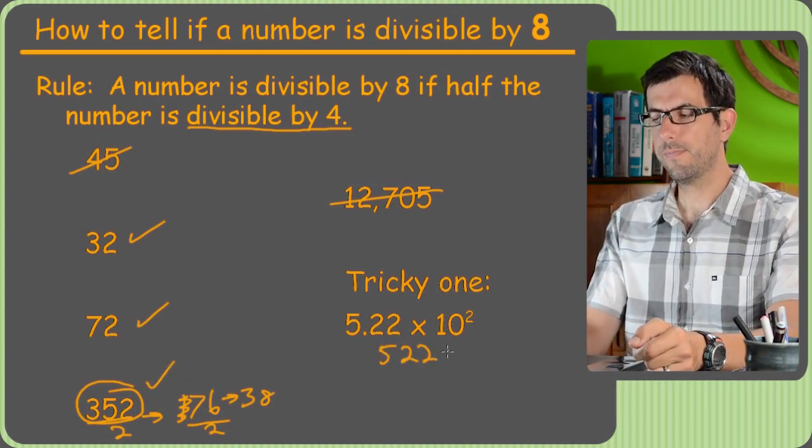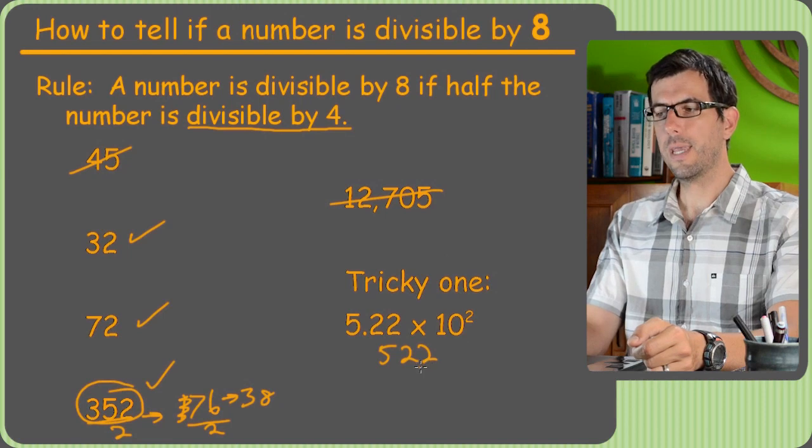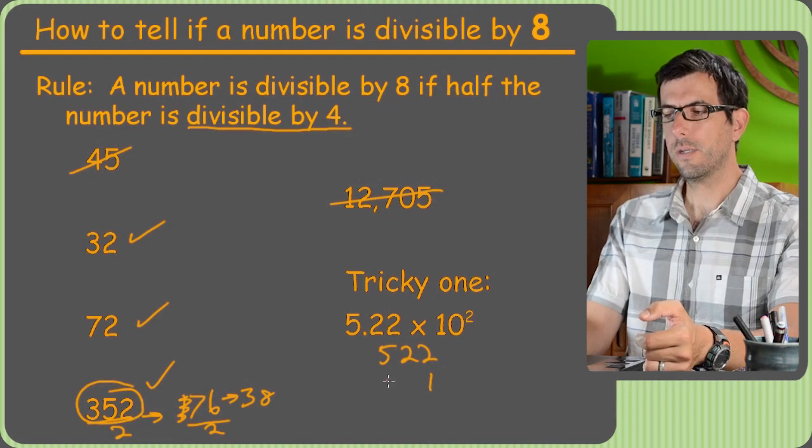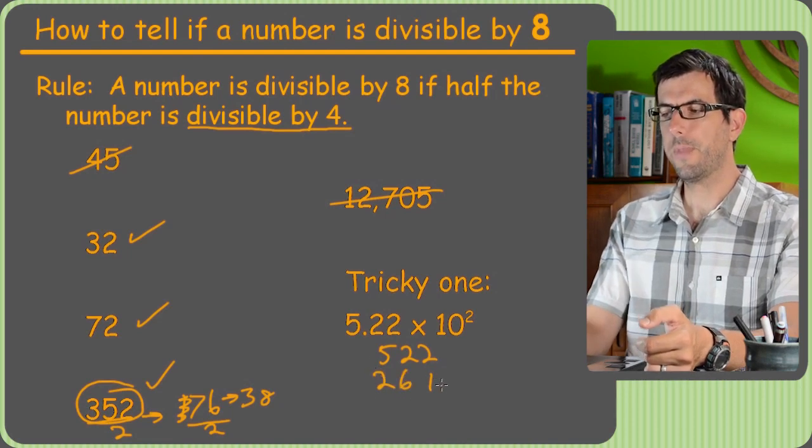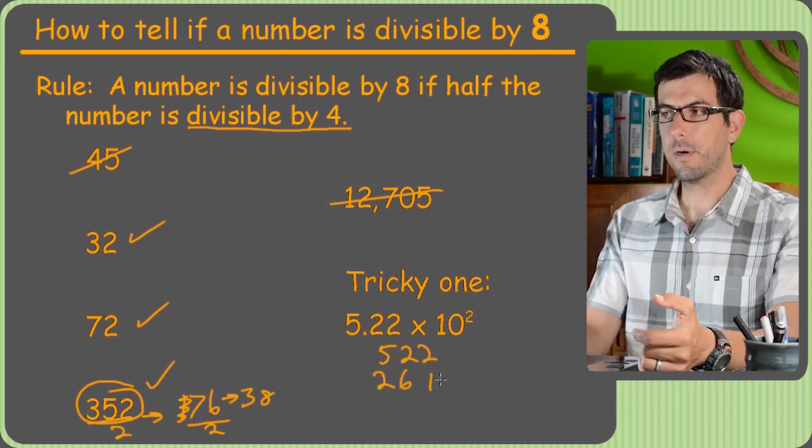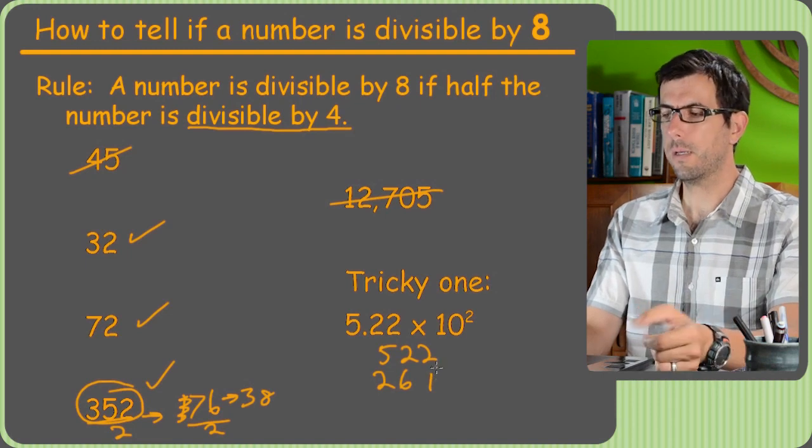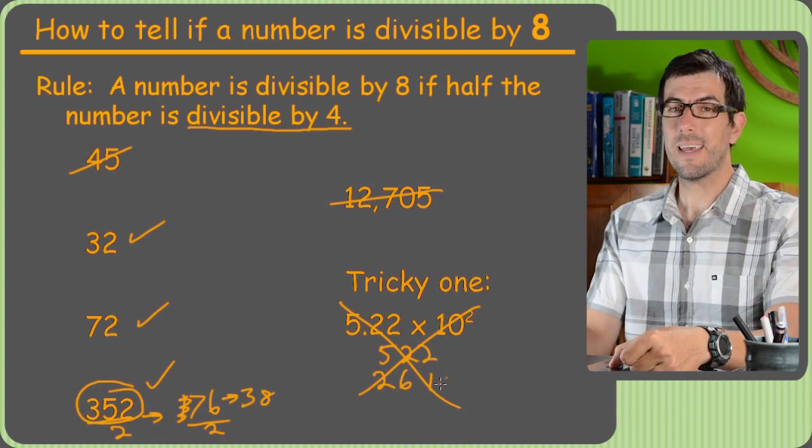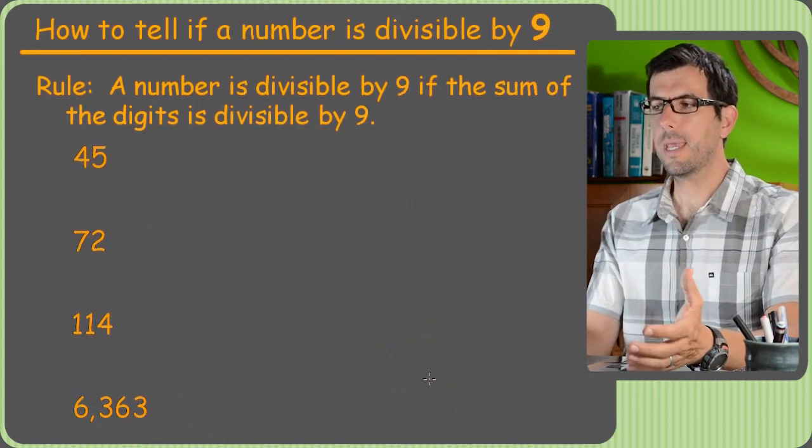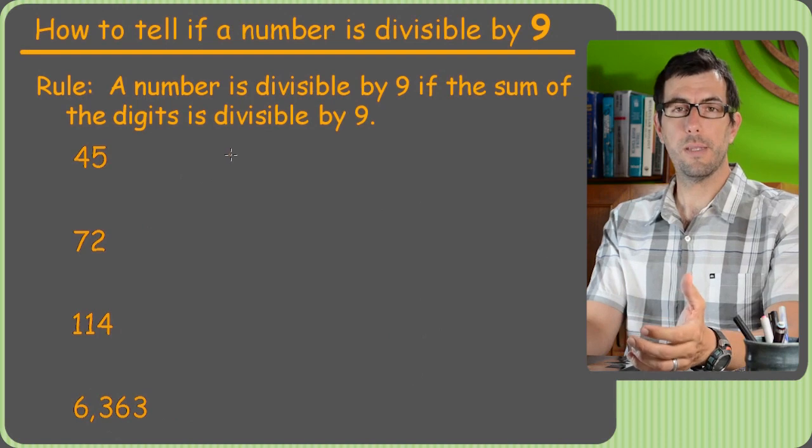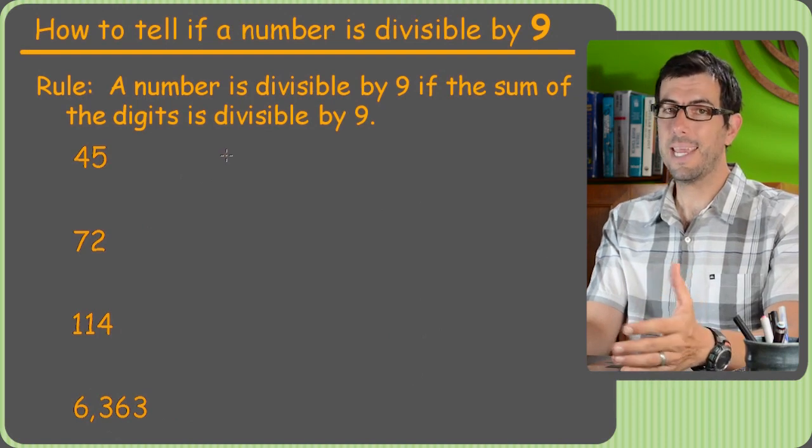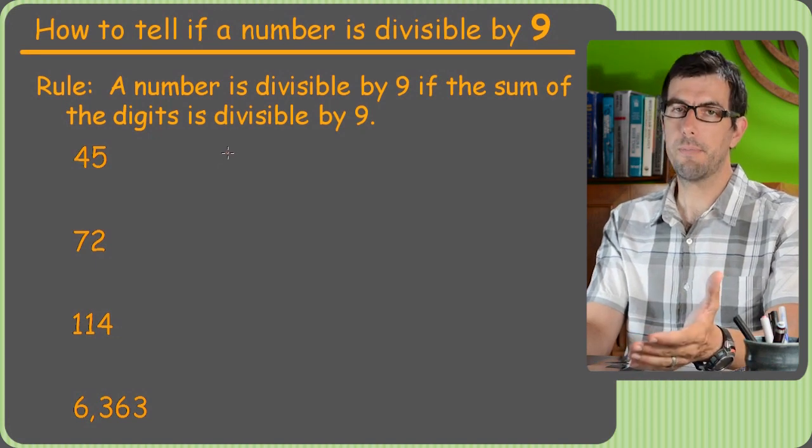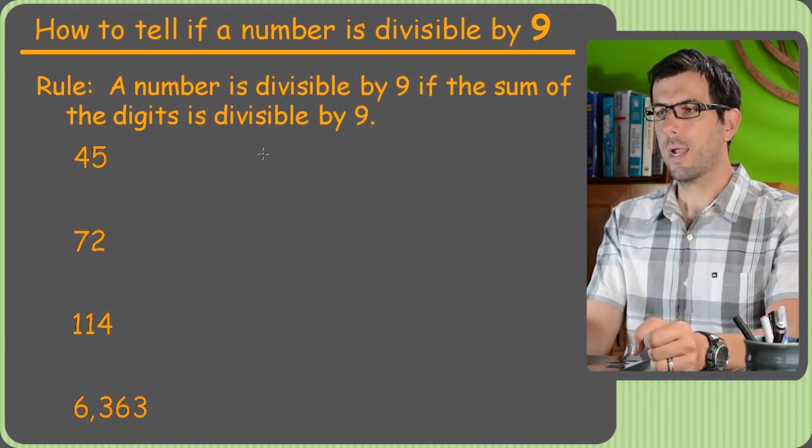Tricky one, 522. Once again, half the number is going to be something, but it's going to end in 1. So it's going to be 261. And 261 is an odd number, obviously not divisible by 4. So, no good. All right, so that's divisibility by 8. Not a very helpful rule, but again, you won't see it that often. Another way to know if something's divisible by 8 is if it's divisible by both 2 and 4, it's got to be divisible by 8. That's one way of looking at it.